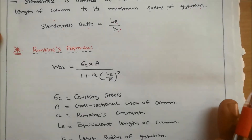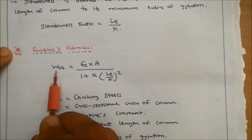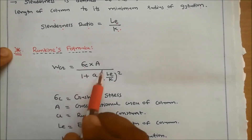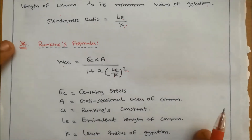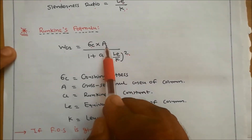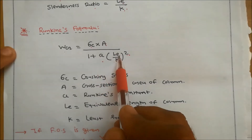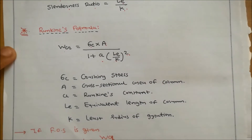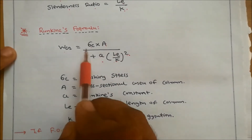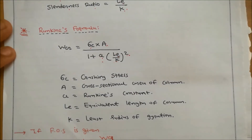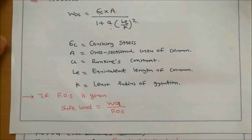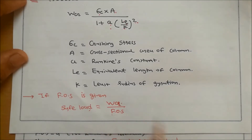The next equation is Rankine's formula. The crippling load according to Rankine's formula is WCR = σC·A / (1 + A·(Le/K)²), where σC is crushing stress, A is cross-sectional area, A is Rankine's constant, Le is equivalent length, and K is least radius of gyration. If factor of safety is given, safe load = crippling load / factor of safety.